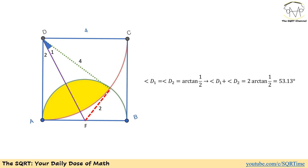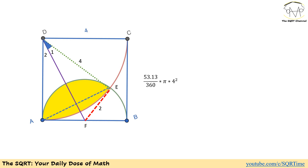To find the angle D1, we are going to use arctan. We can say that tan of D1 is going to be 2 over 4, so D1 is going to be arctan of one-half. And we can say that D1 plus D2 is going to be 2 times arctan of one-half, which is equal to around 53.13 degrees.